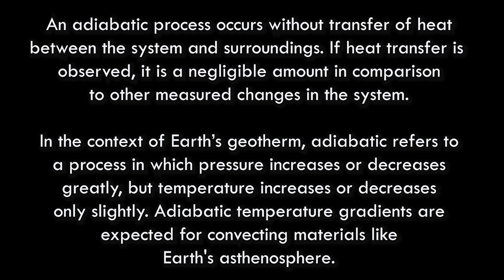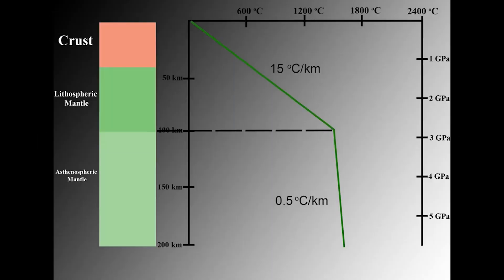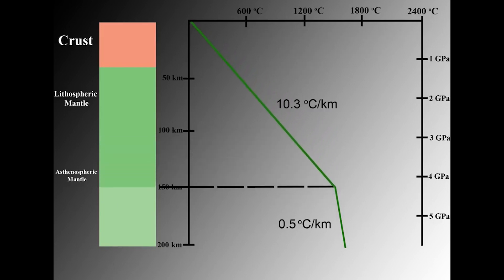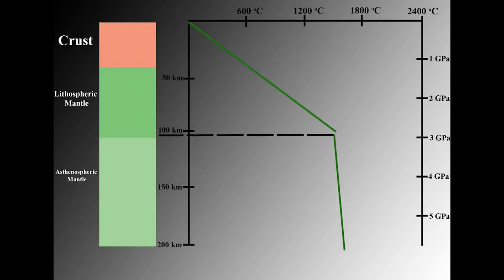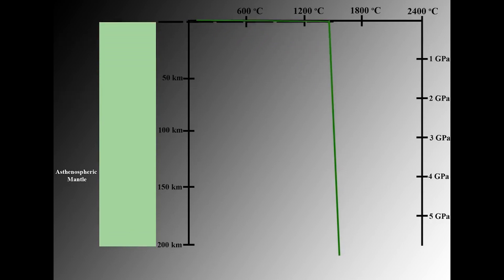If heat transfer is observed, it's a negligible amount in comparison to the other measured changes in the system. In the context of earth's geotherm, adiabatic refers to a process in which pressure increases or decreases greatly, but temperature increases or decreases only slightly. Adiabatic temperature gradients are expected for convecting materials like earth's asthenosphere. The asthenosphere's temperature remains almost constant with depth, changing only a fraction of a degree per kilometer — different from the lithosphere's conductive geotherm, where temperatures change several degrees per kilometer. If the asthenosphere's geotherm were to extend to surface depths, its temperature would reach 1400 degrees Celsius, called the mantle potential temperature.